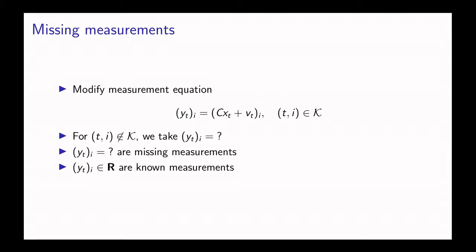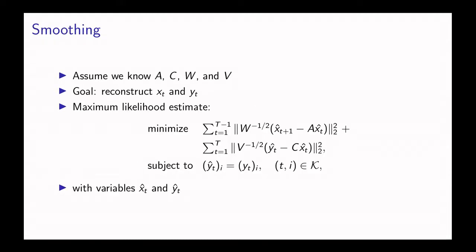We're going to assume that we know all the parameters in the system, which are the dynamics matrix, the measurement matrix, and the covariance matrices. Our goal is given these measurements to reconstruct the sequence of states x and the missing measurements y.